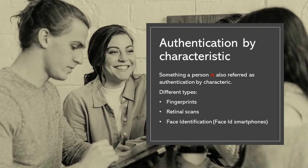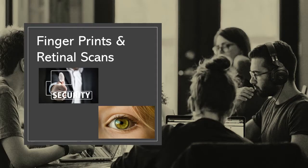Something a person is is commonly referred to as authentication by characteristic. The characteristic is a physical characteristic unique to the person. Different types include fingerprints, retinal scans, and face identification like Face ID on smartphones. Fingerprints, retinal scans, and face identification can be unique to all individuals, so by using these the identity of a person can be verified. This type of physical characteristic verification is known as biometrics.